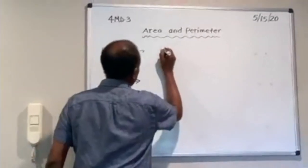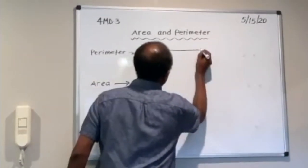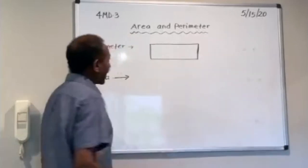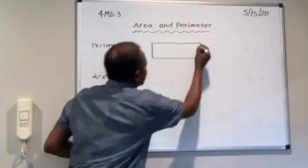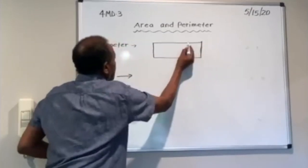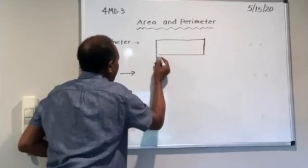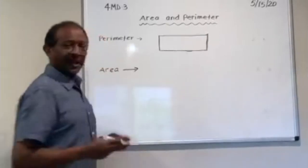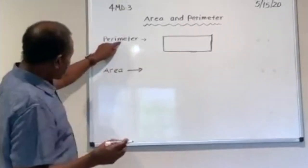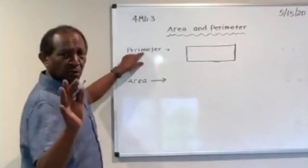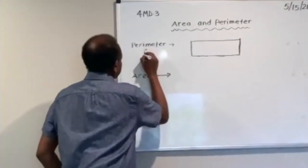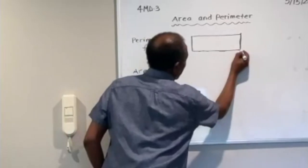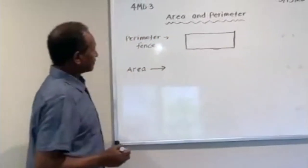So we are measuring — for example, if I draw this rectangle and measure the distance from here all the way around this closed figure, that's the perimeter. So perimeter, to help you remember, is like a fence. When you put a fence, you put it around the perimeter of the field.